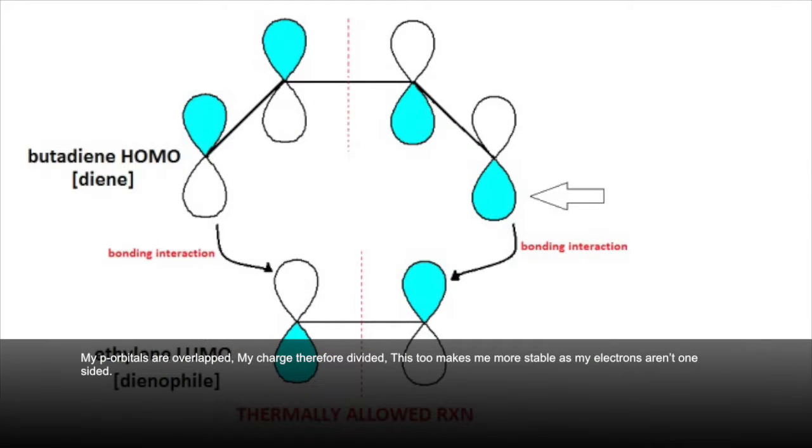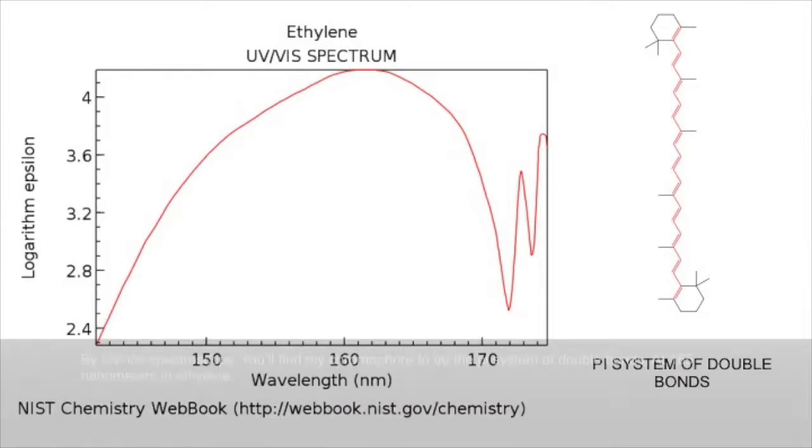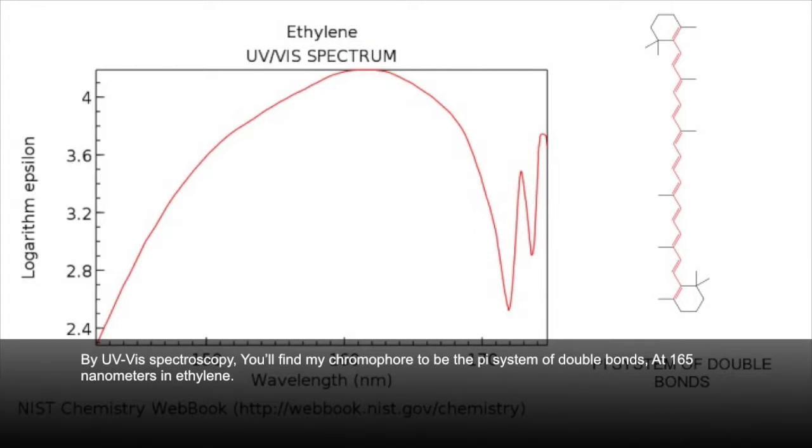My p orbitals are overlapped, my charge therefore divided. This too makes me more stable as my electrons aren't one-sided. By UV-vis spectroscopy, you'll find my chromophore to be the pi system. With double bonds at 165 nanometers.